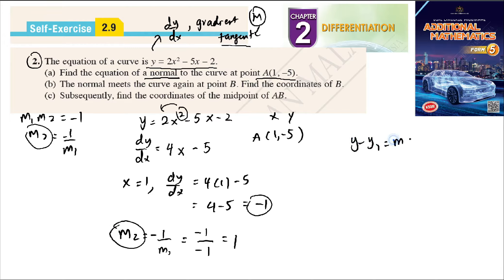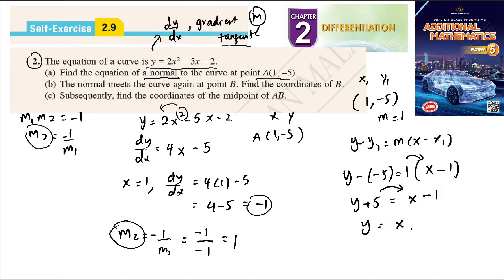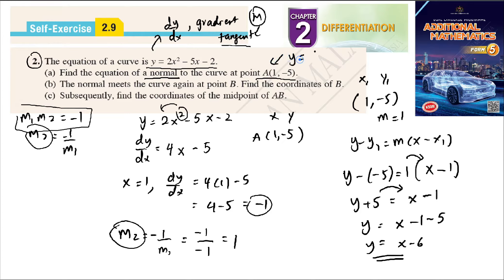Now we form the equation of the normal using y - y1 = m(x - x1). The coordinate of point A is (1, -5), so x1 = 1, y1 = -5, and m = 1. Substituting: y - (-5) = 1(x - 1), so y + 5 = x - 1, which gives y = x - 1 - 5, so y = x - 6. This is the equation of the normal.